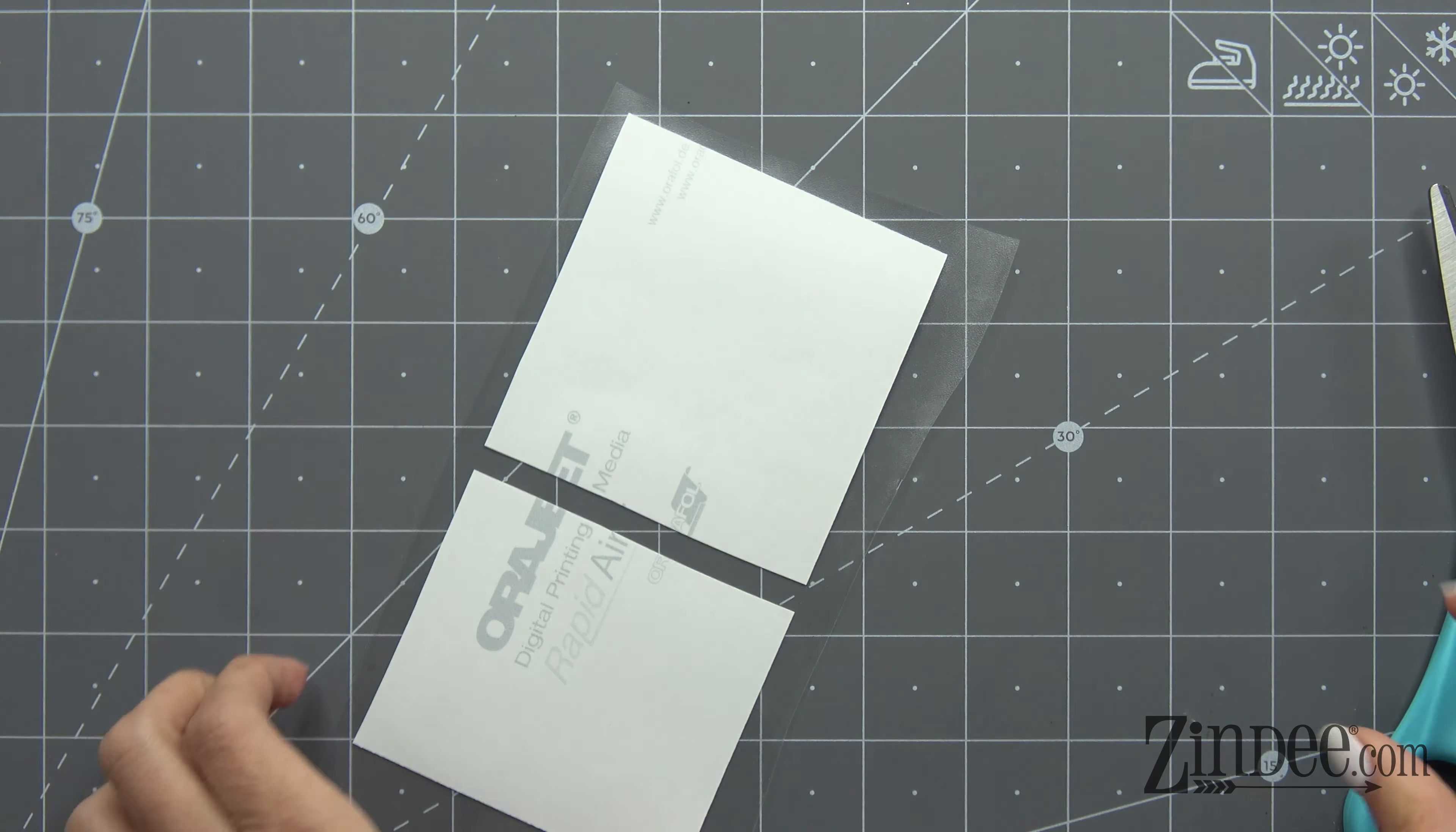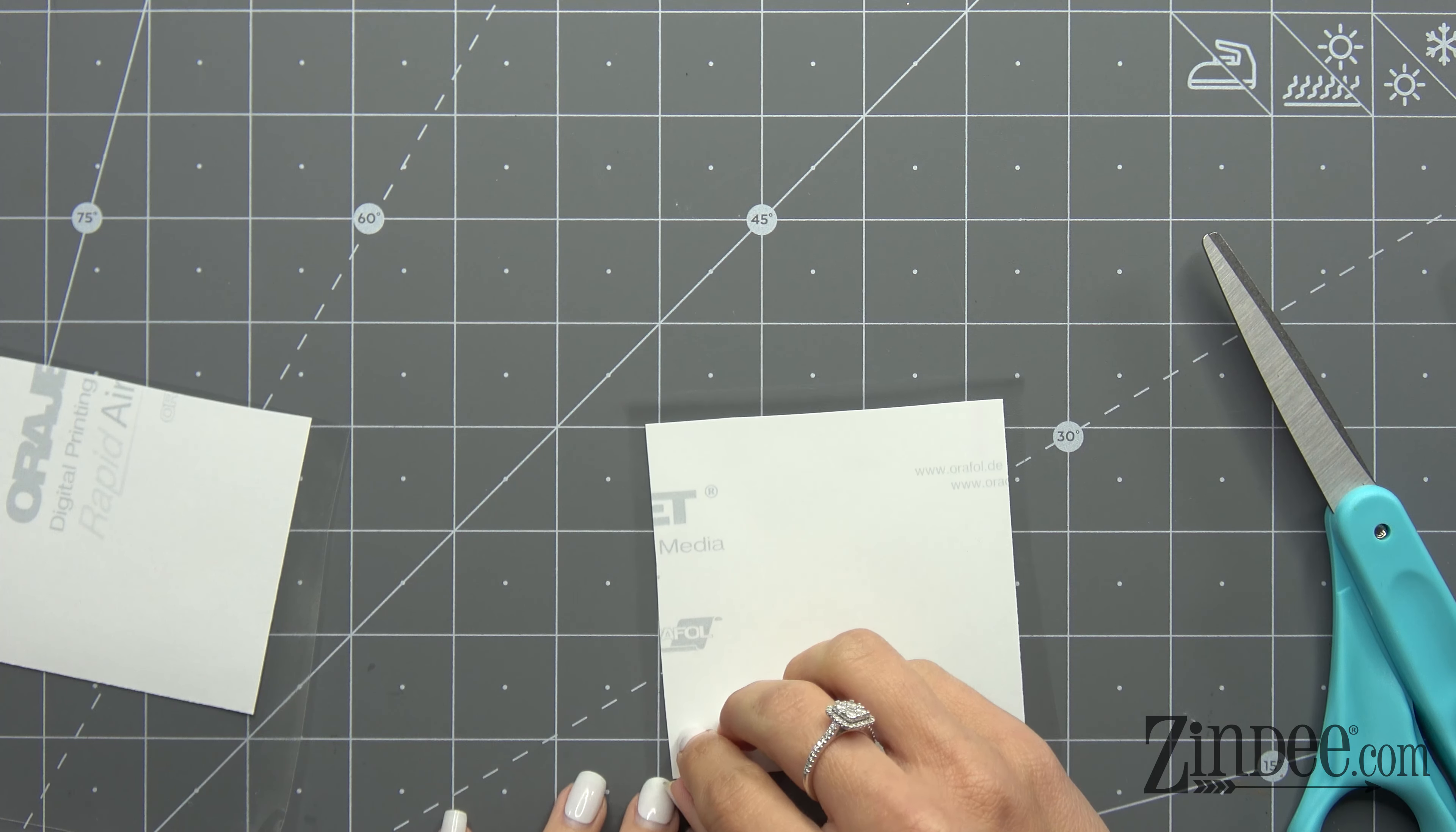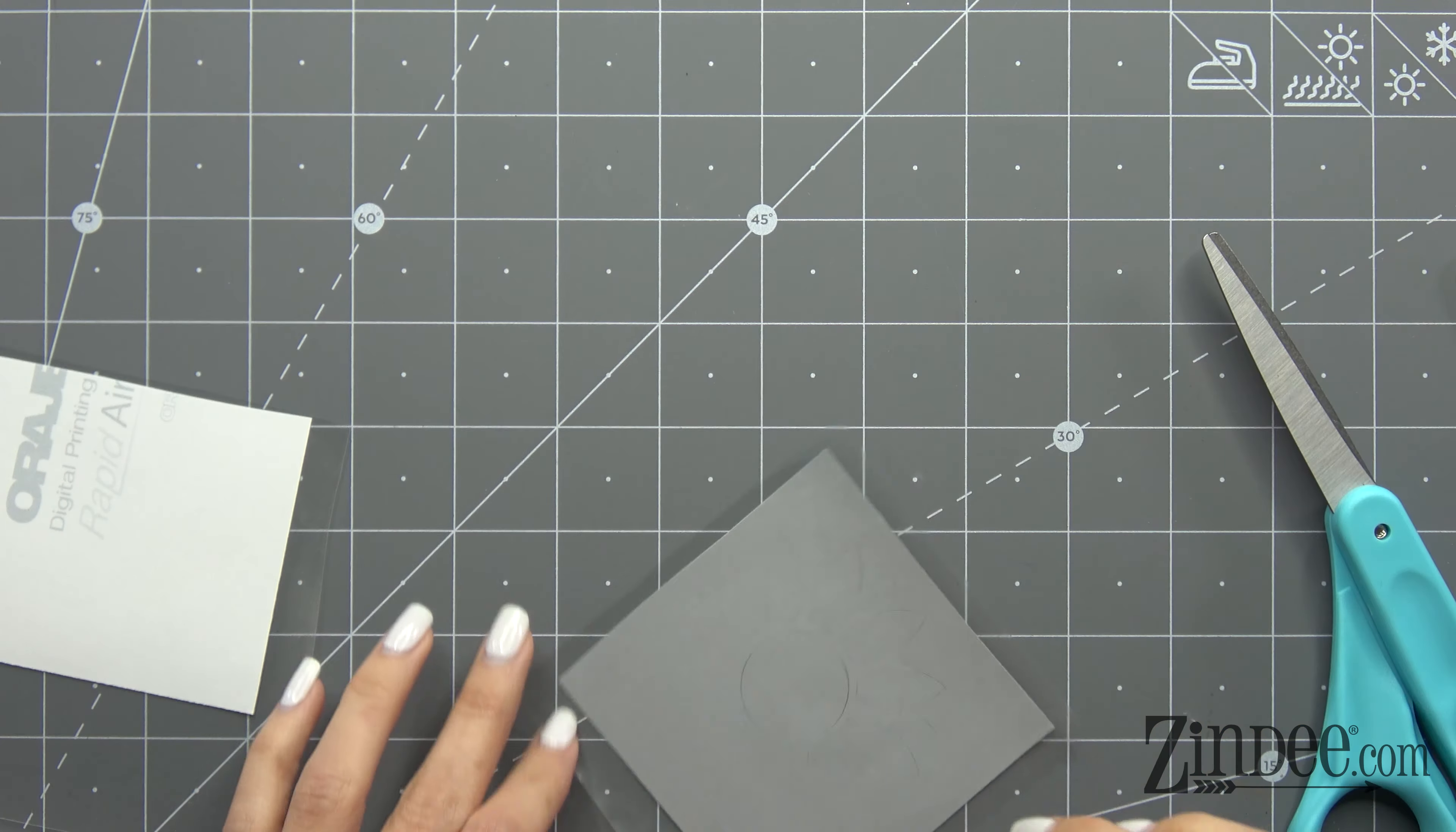From here, we're going to turn it over. I'm going to separate these. We're going to pull this backing paper off, and you want to save your backing paper in case you're not wanting to use your decal right away.